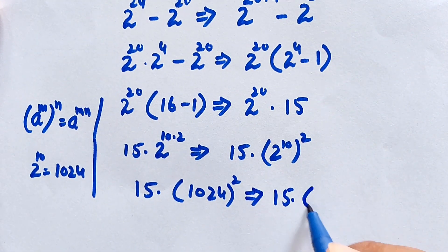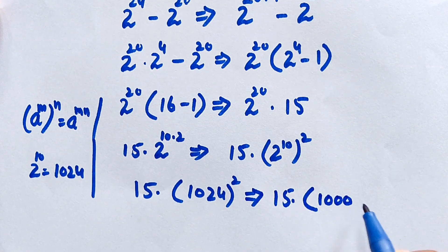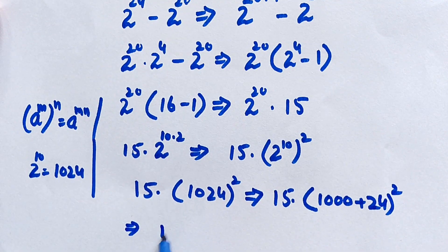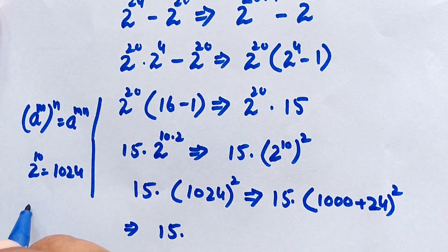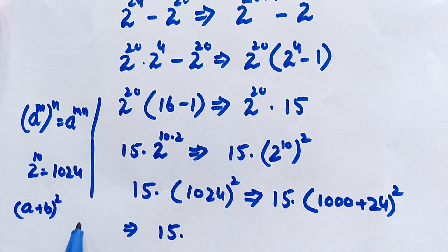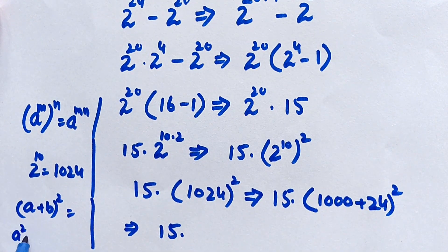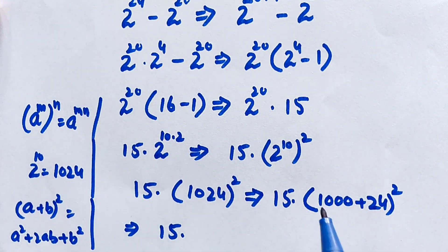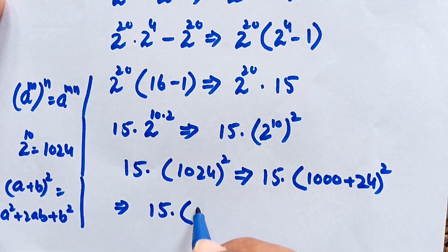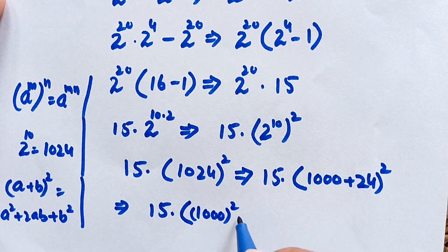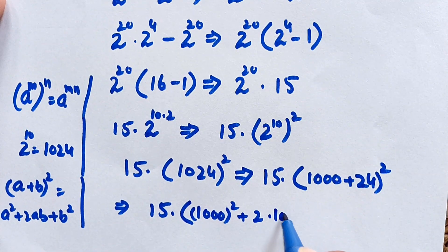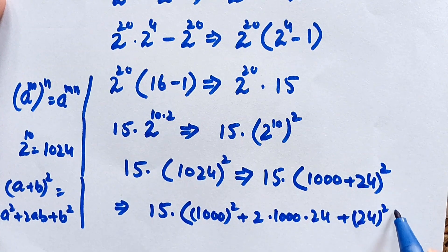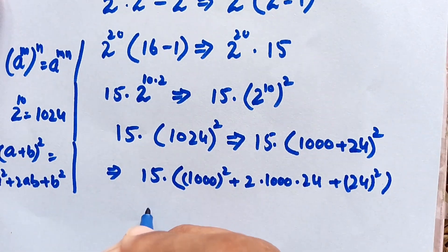We rewrite 1024 as 1000 plus 24, giving 15 times 1000 plus 24 whole squared. To solve this we use the identity: a plus b whole square equals a squared plus 2ab plus b squared. Applying this identity, it becomes 15 times 1000 squared plus 2 times 1000 times 24 plus 24 squared.